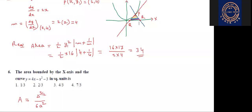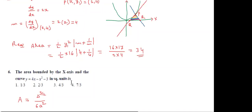Now see the sixth question: the area bounded by the x-axis and the curve y = 4x - x² - 3, in square units. The shortcut formula here is A = Δ^(3/2) / (6a²). The quadratic equation is y = -x² + 4x - 3, so a = -1, b = 4, c = -3.